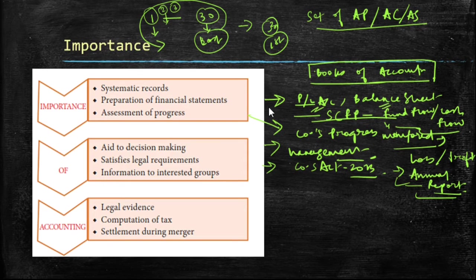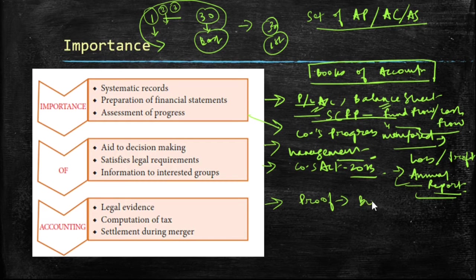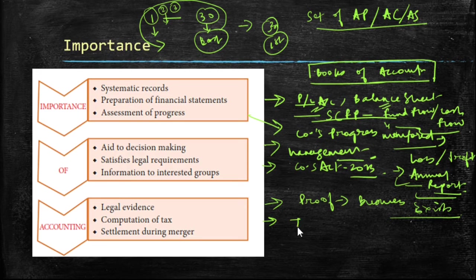The most important group is the internal group — that is, the management of the company. Apart from that, we have owners who provide capital, creditors, the government, researchers, and academicians. All these documents also provide legal evidence — a proof that the business exists and is operating with all these transactions. This is also helpful for the computation of tax.